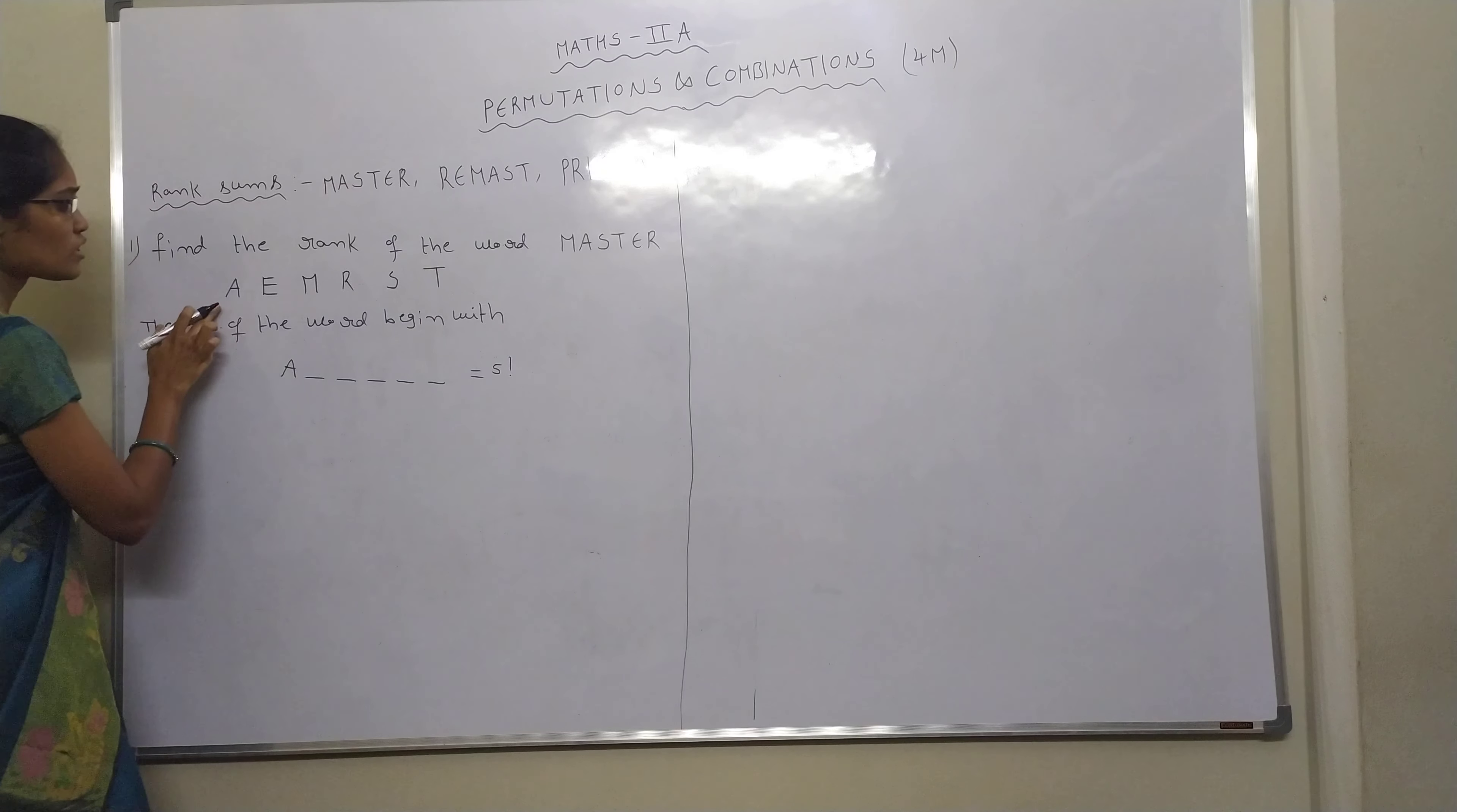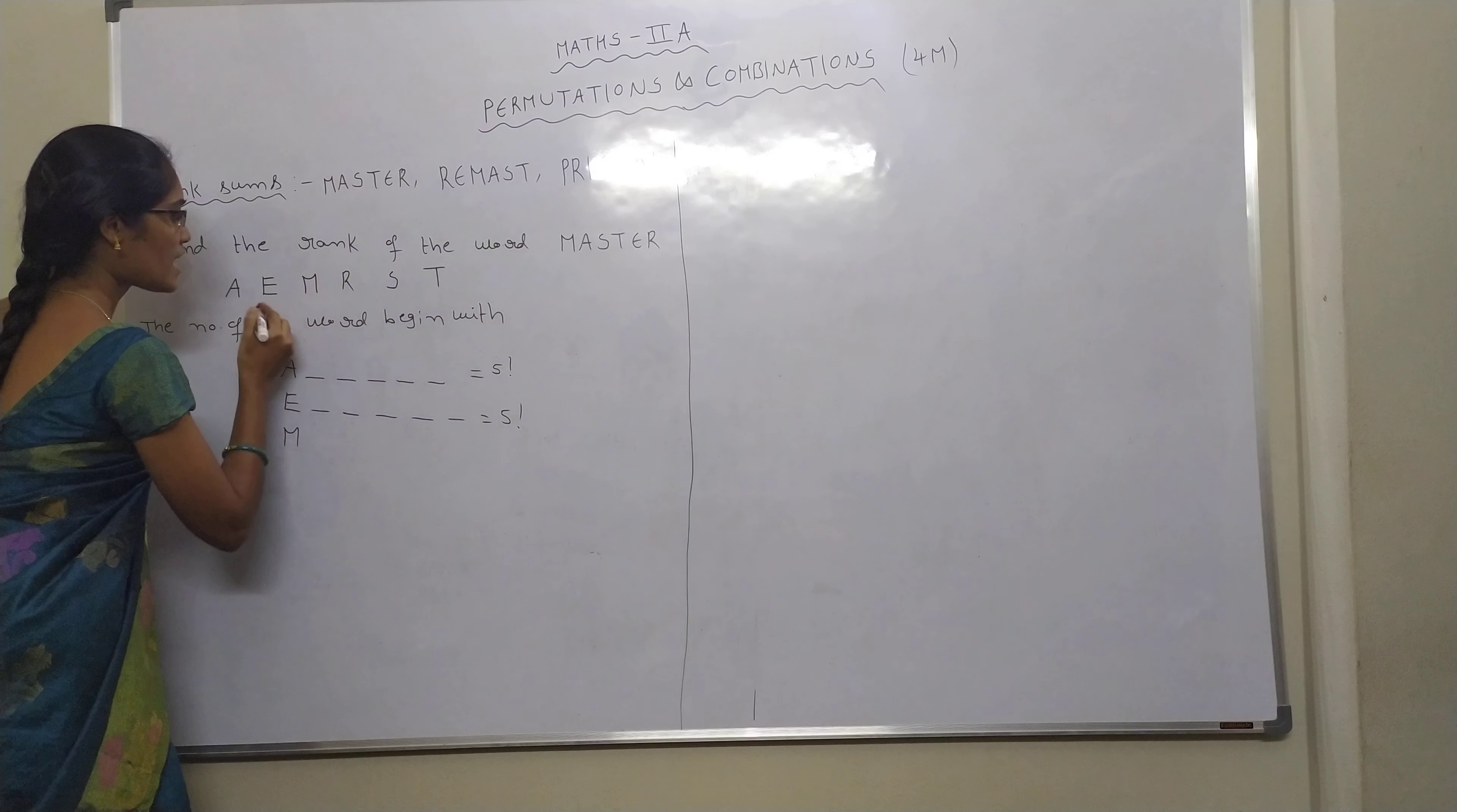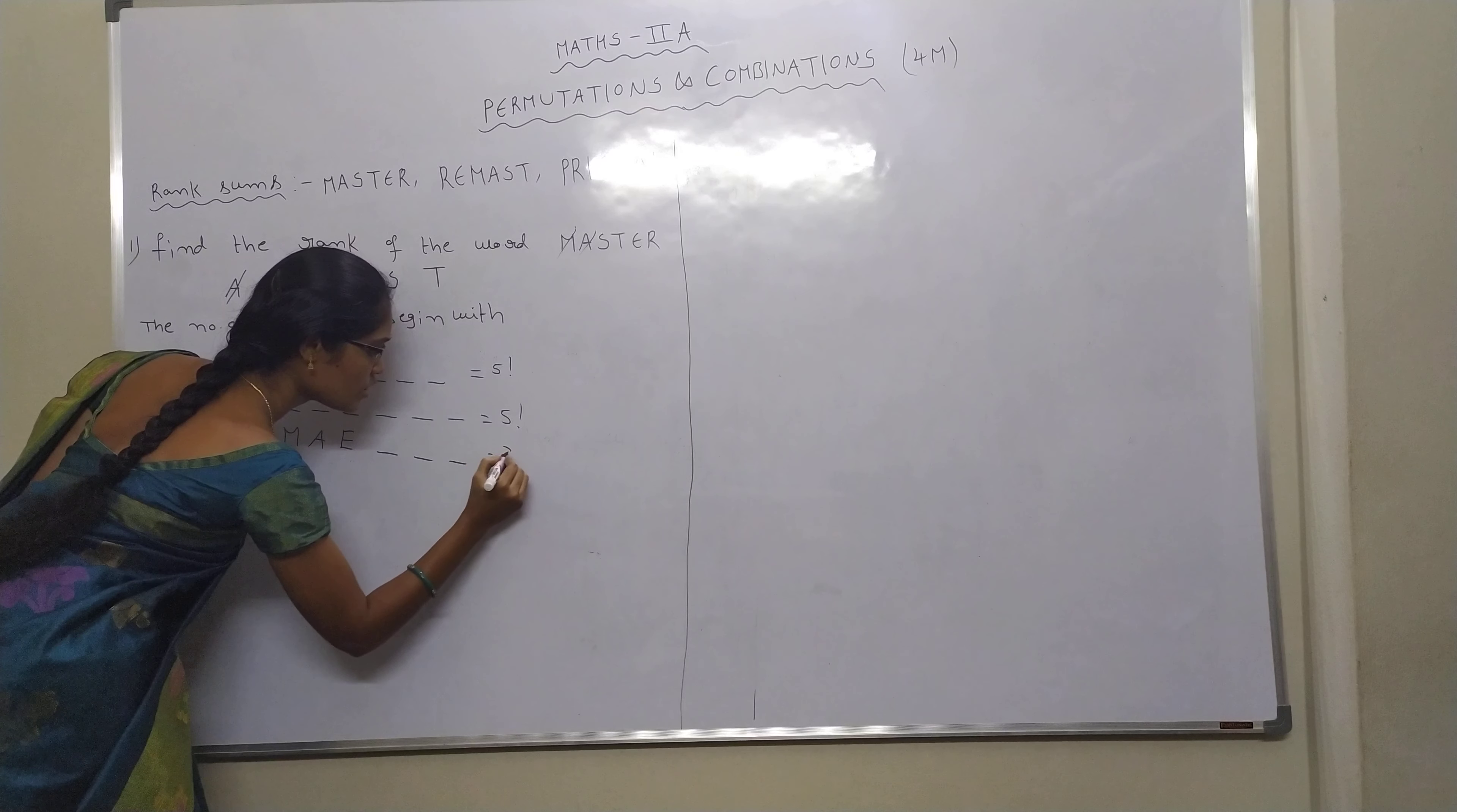Next, words beginning with M. M gets cancelled. Come to first letter. First letter is A. In MASTER word, after M we need A, so we'll cancel this. Next order, M A. After that we need S. E is not needed, so one, two, three, that is equal to three factorial. Three empty places, so three factorial.